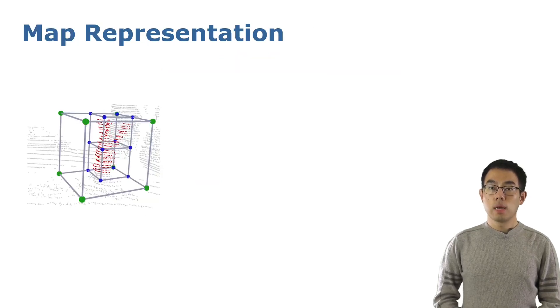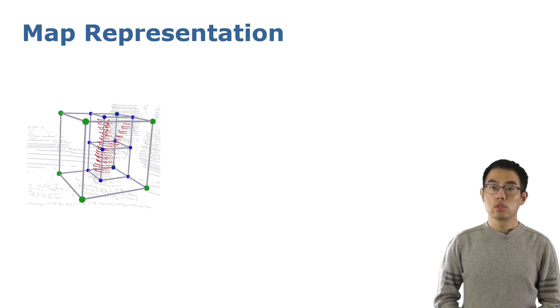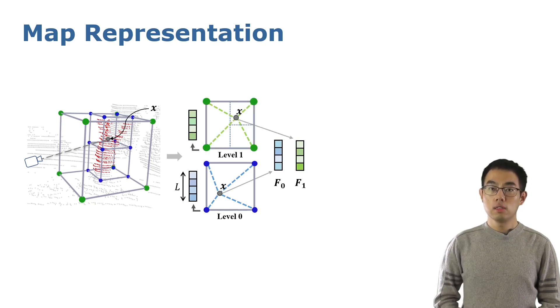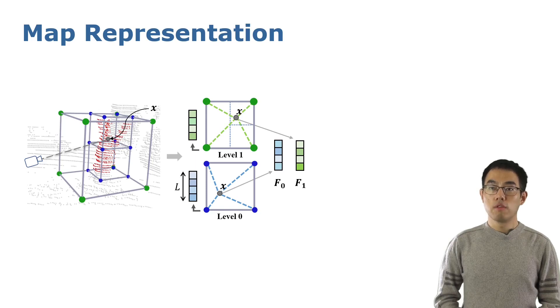Let's start with our map representation. After we get the raw point cloud with poses, we use an Octree to organize the points and store a one-dimension feature vector for every corner on every level. Once we want to query a coordinate, we first look up which lowest level's node it belongs to and use trilinear interpolation to calculate the feature vector of this level. Then, we do the same operation for each upper level and add up all the feature vectors to get the summed vector to represent the geometric information of this coordinate.